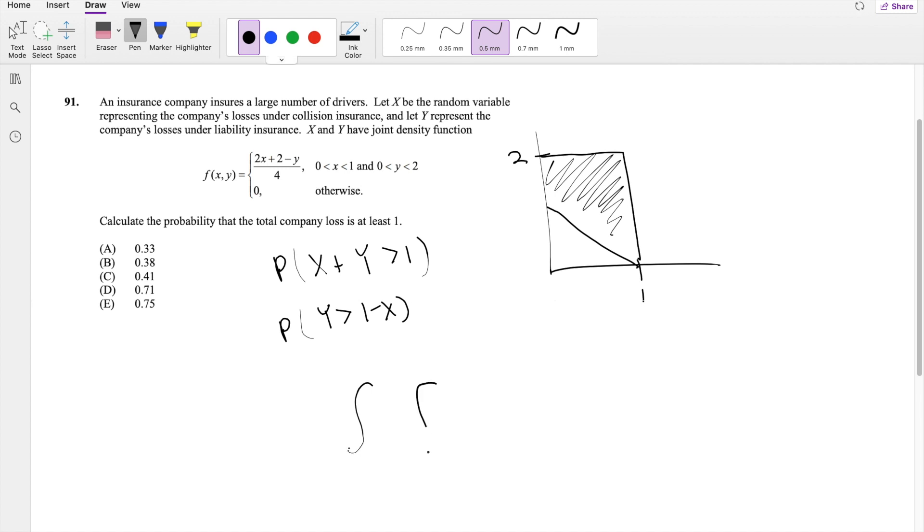So then, if we're integrating with respect to dY this way, then the top one, the maximum number is going to be 2, and the lower one is going to be the line we found, 1 minus X, of the function, which is—I'm going to throw that one-fourth out. I hope I remember this one. Then 2X plus 2 minus Y, dY.